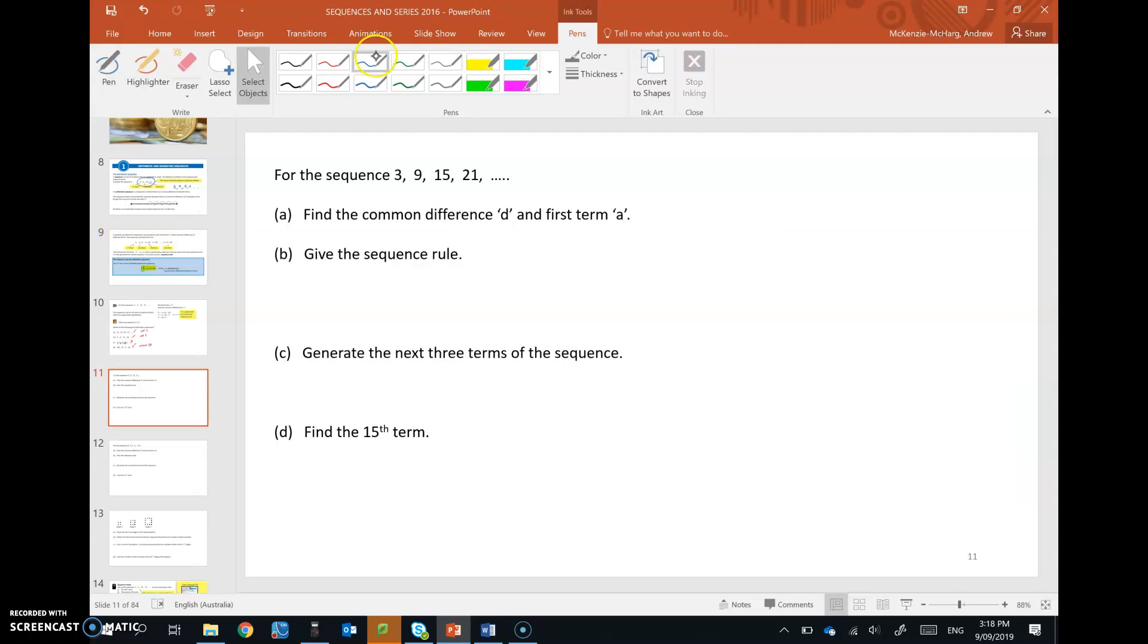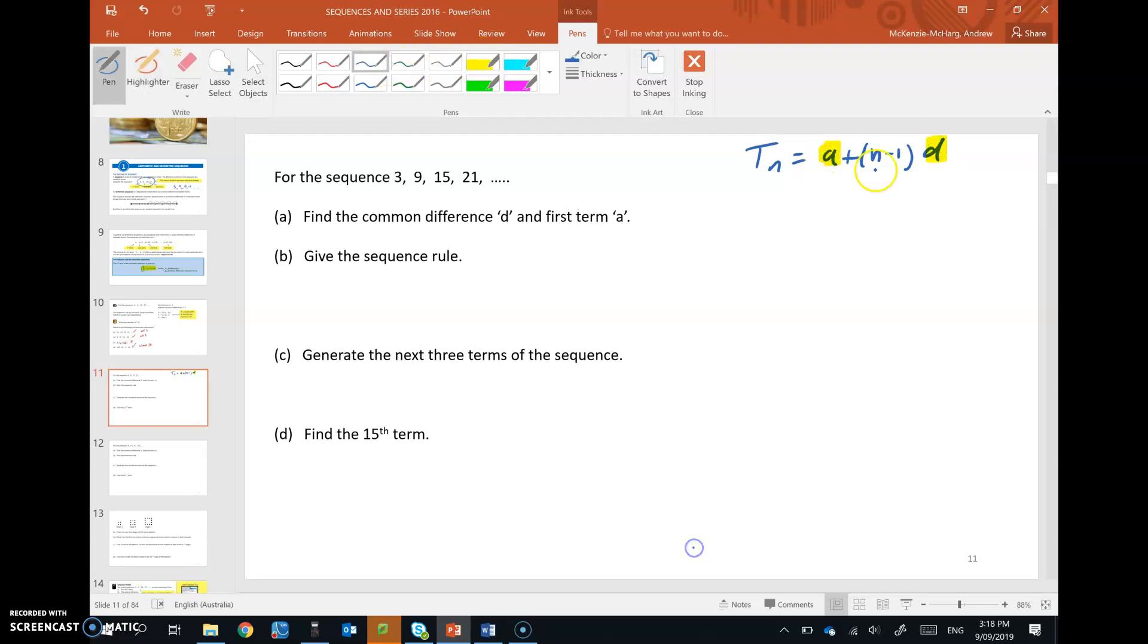So, if we look at this example here, I'm going to write down the general rule for a sequence over here. So we need to put numbers in for a and d. Tn and n are just going to be part of the sequence rule as it comes out in the end. So let's determine the value of a. So we look to the very first term, and it's 3. And then we look at d as our common difference between terms, and that is going up by 6s each time. So d is 6.